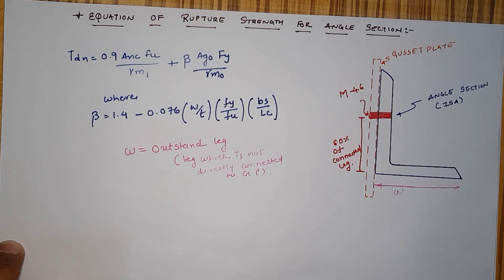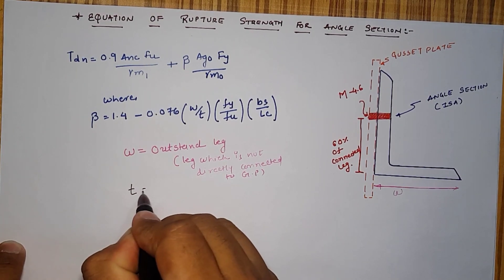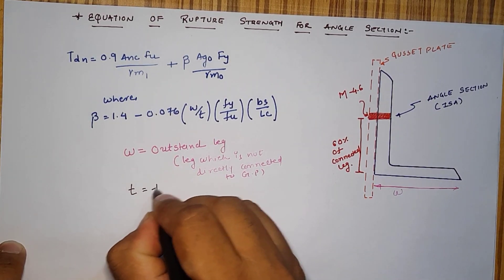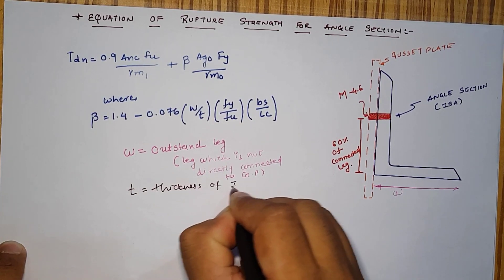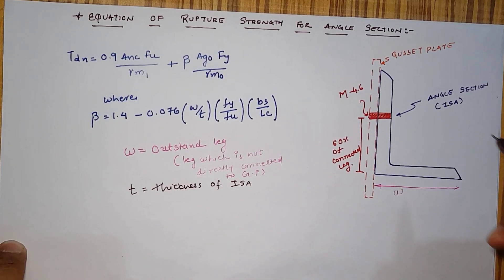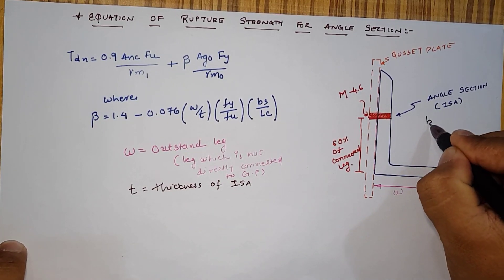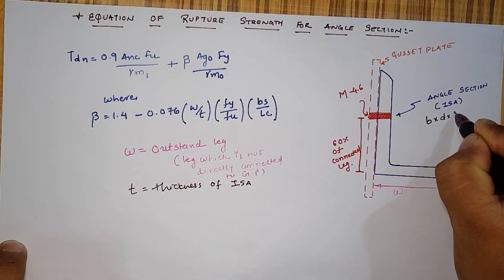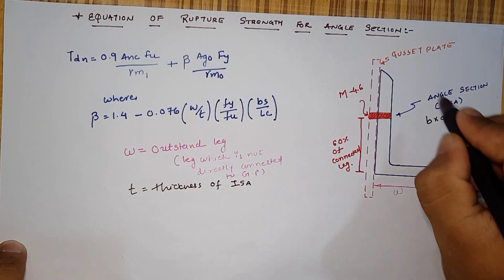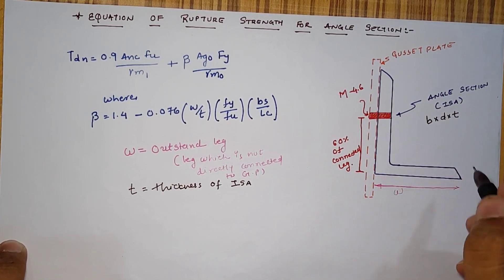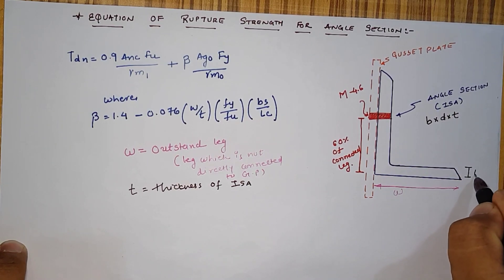According to the connection we have to give the notation W as not connected leg. T is given as thickness of ISA section. Thickness of the Indian standard angle section is known as T.